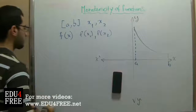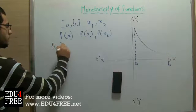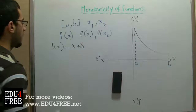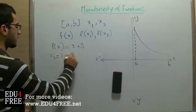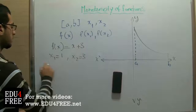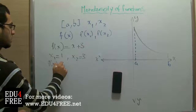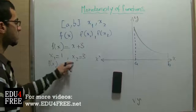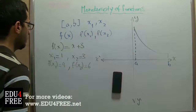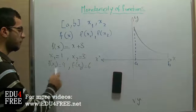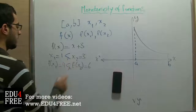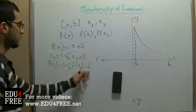If we have a function f(x) equals x plus 3, let's say x1 equals 1 and x2 equals 3. So f(x1) will be 1 plus 3, which is 4, and f(x2) will be 3 plus 3, which is 6. This function is increasing because the signs are the same: 3 is more than 1, and 6 is more than 4.